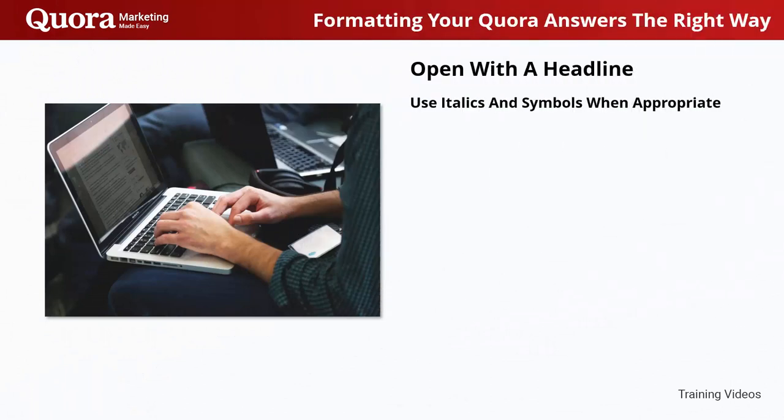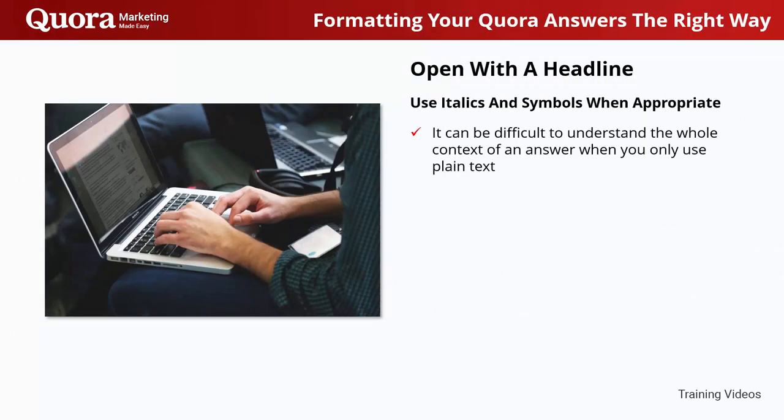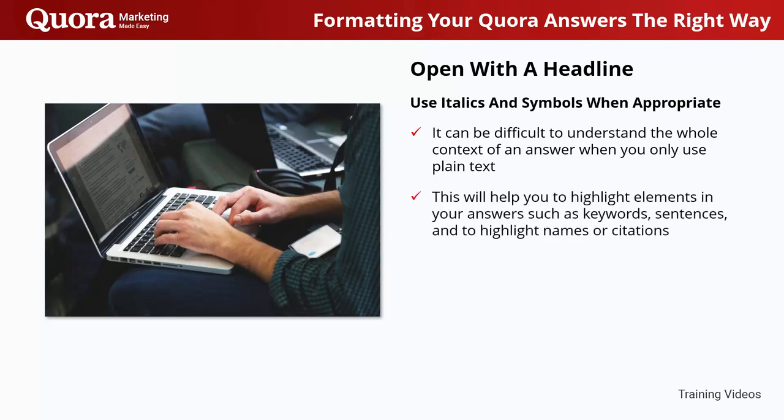Use italics and symbols when appropriate. It can be difficult to understand the whole context of an answer when you only use plain text. Because of this, it is necessary that you use italics and symbols such as quotes when appropriate. This will help you to highlight elements in your answer such as keywords, sentences, and to highlight names or citations.